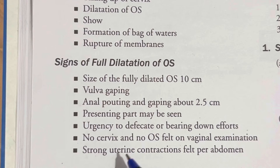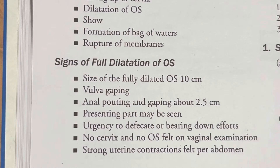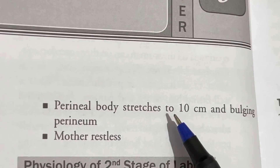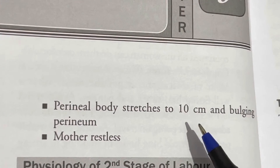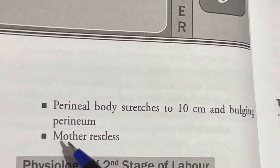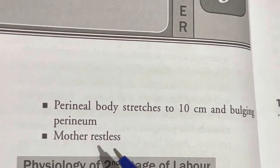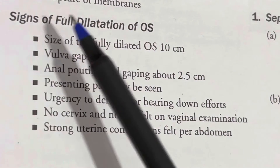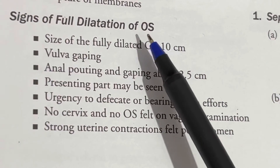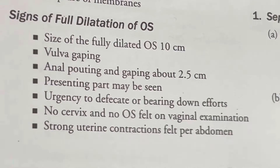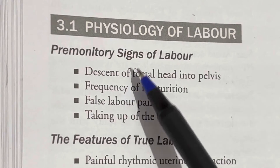Additional signs of full dilatation include: strong uterine contractions felt per abdomen, the perineal body stretches to 10 centimeters, bulging perineum, and the mother becomes restless. These are all the signs of full dilatation of the cervix or os.